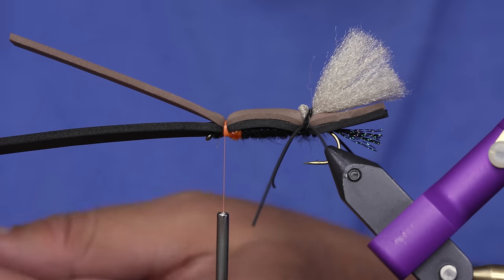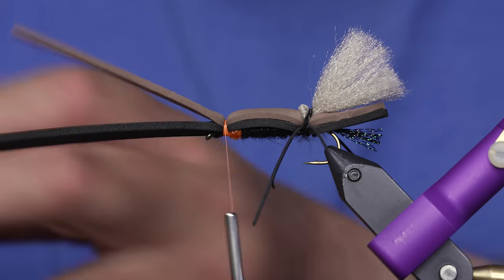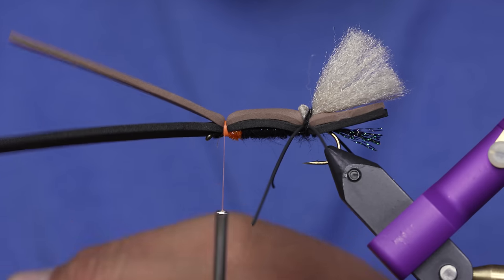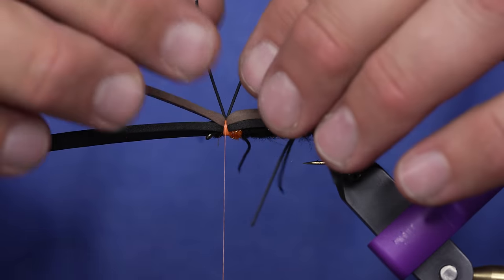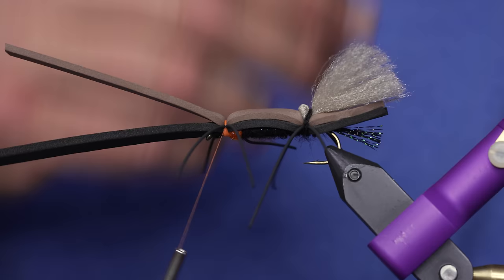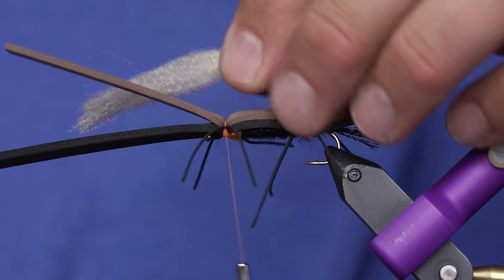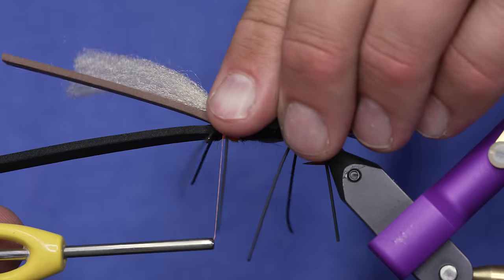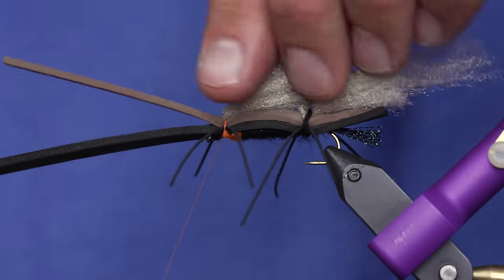So I'll do the same thing I did in the back: some chunky legs and a wing. Same clump of hair, but this time it's going to be quite a bit longer in the front because it's going to go over and kind of meet up with the back wing. So a few turns of thread, same technique in the front where I'm going to push it forward.